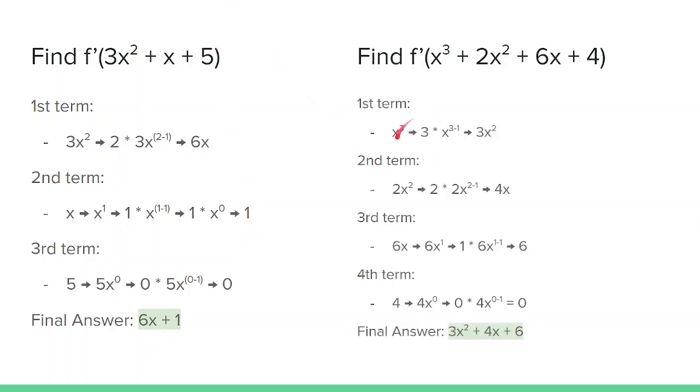For this problem, x cubed plus 2x squared plus 6x plus 4, the derivative of x cubed would be 3 times x to the 3 minus 1, which is 3x squared, because we're moving 3 to the front and subtracting 1 from the exponent. For the second term, 2x squared, move the 2 to the front and subtract 1 from the exponent to get 4x.